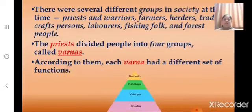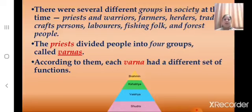There were several different groups in society at that time: priests and warriors, farmers, herders, traders, craftspersons, labourers, fishing folk and forest people. The priests divided people into four groups called Varnas, and according to them each Varna had a different set of functions. Can you name the four groups into which Later Vedic society was divided? It was divided into Brahmins, Kshatriyas, Vaishyas and Shudras.